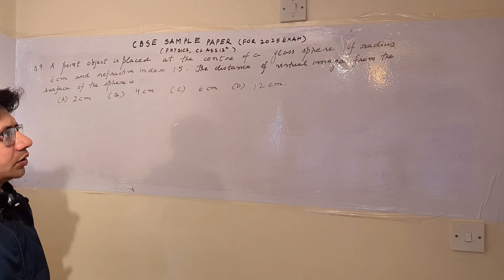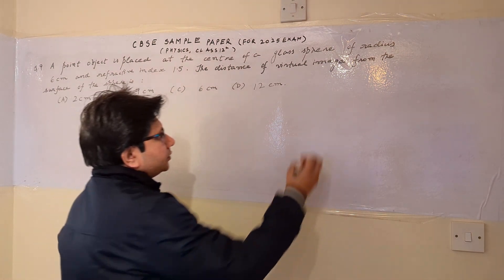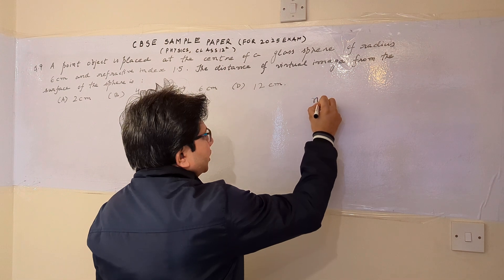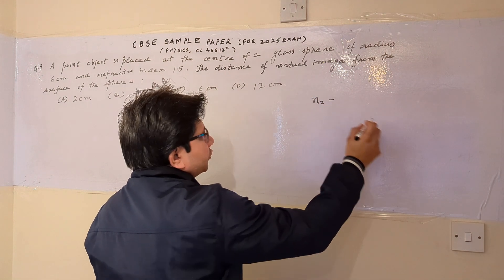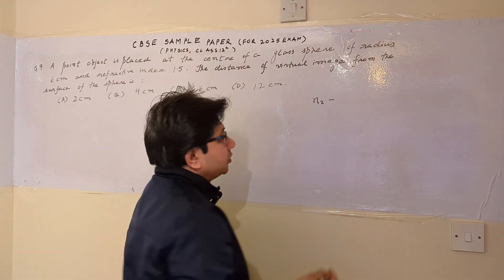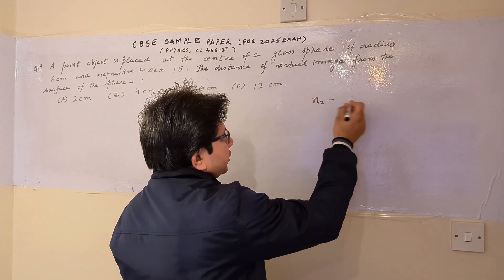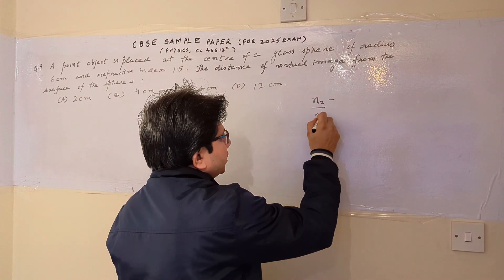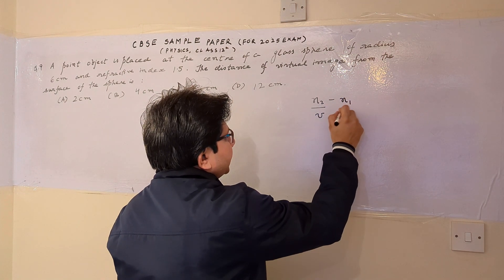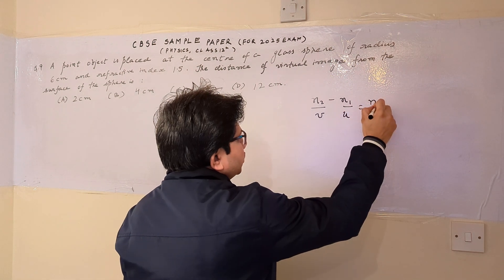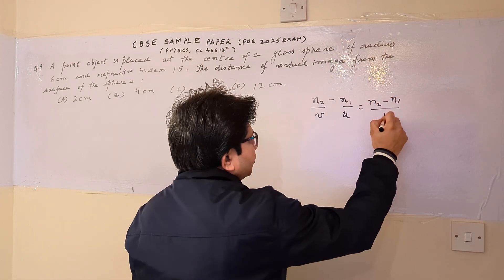So the problem is based on the formula used for two interfaces having refraction phenomena. For the refraction phenomena, we have this formula: N2 upon V minus N1 upon U is equal to N2 minus N1 upon R.